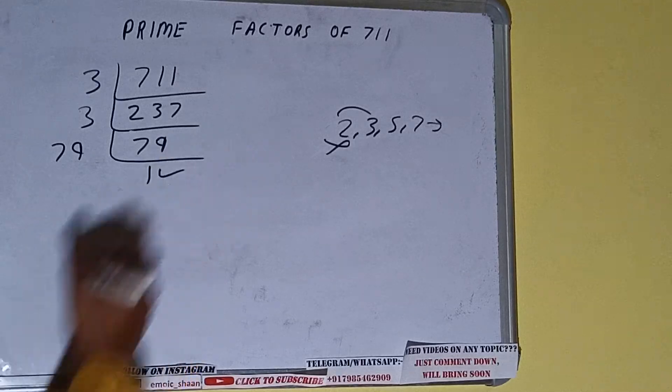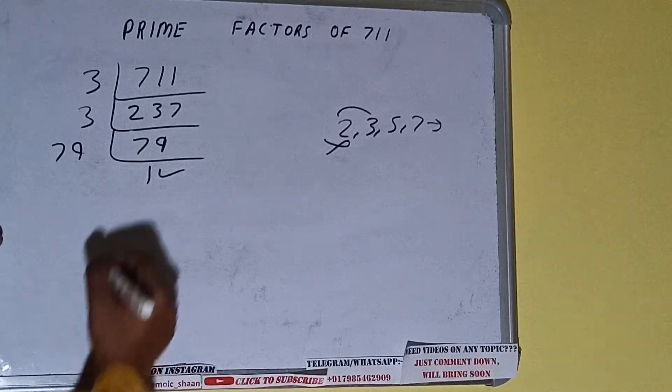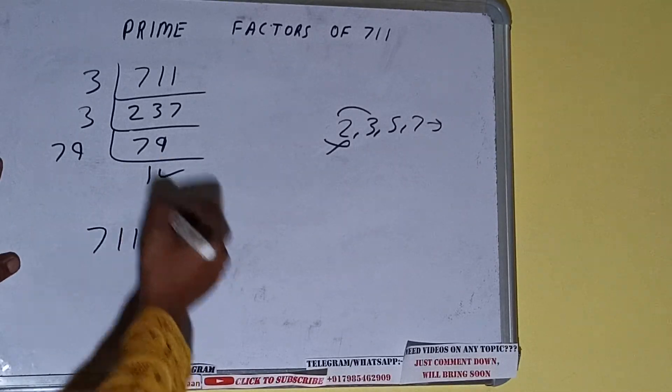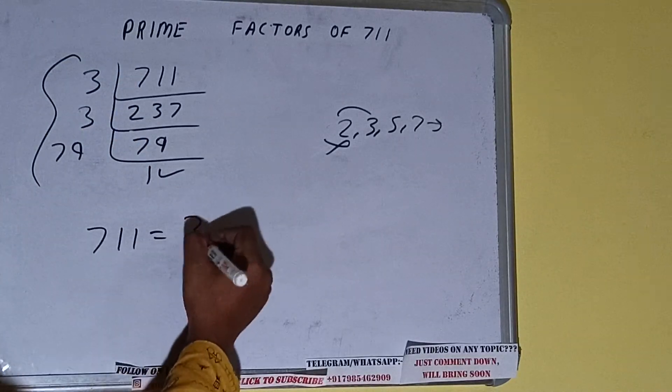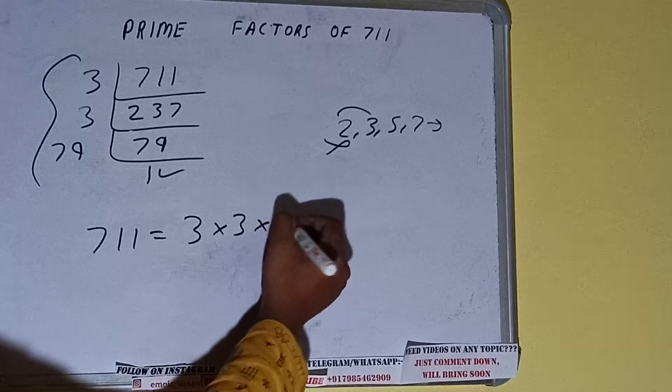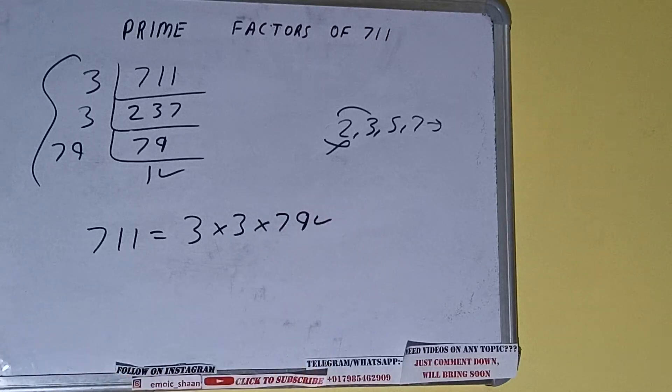Once we get 1, we need to stop and do one last thing. That is, prime factors of 711 equals multiply whatever we have on the left-hand side. That is 3 × 3 × 79. That will be the answer.